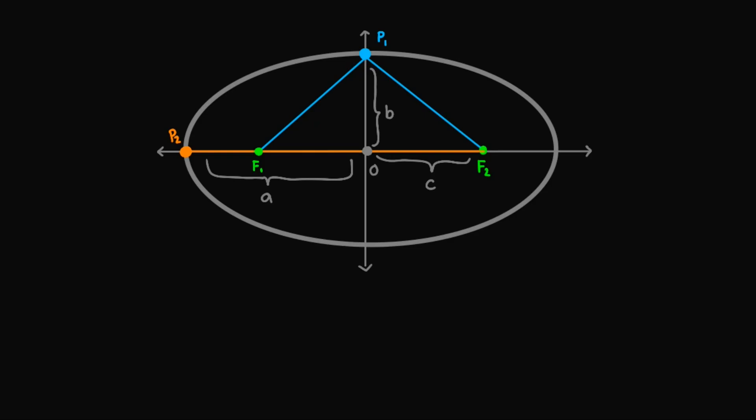By definition, we know that the sum of the distances to the foci given a point is constant. This means that the sum of these two is equal to the sum of this. So we have P2F1 plus P2F2 equals P1F1 plus P1F2, and we'll take advantage of this equality.